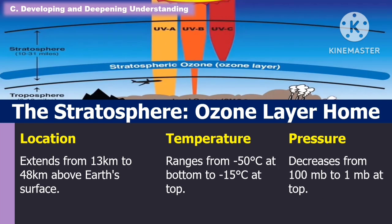Another layer of the atmosphere is the stratosphere, which is the ozone layer home. It extends from 13 kilometers to 48 kilometers above Earth's surface. Temperature ranges from negative 50 degrees Celsius at the bottom to negative 15 degrees Celsius at the top. Pressure decreases from 100 MB to 1 MB at the top.